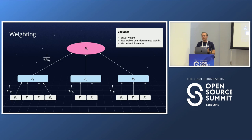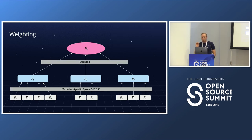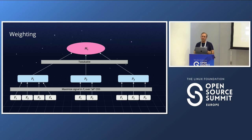We can do the weighting in different ways. Currently we use equal weights, but we could make it user-determined. One variant would be to maximize the signal across features when building practices, extracting as much information as possible. We could also make it tweakable how practices are combined into metrics, so organizations can choose which practice is most important according to their policy.